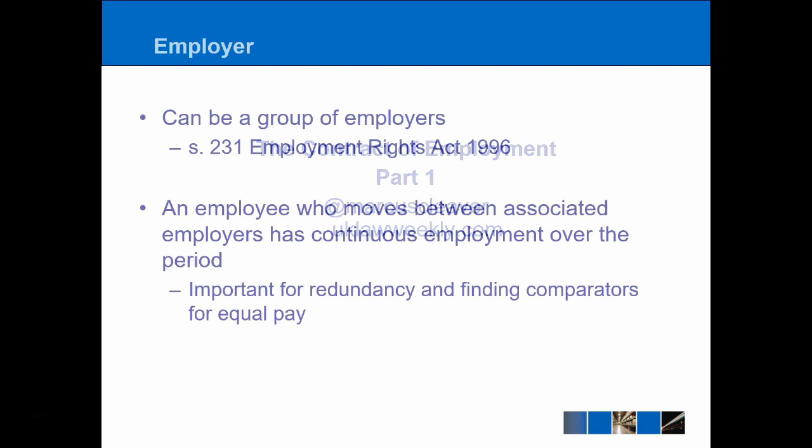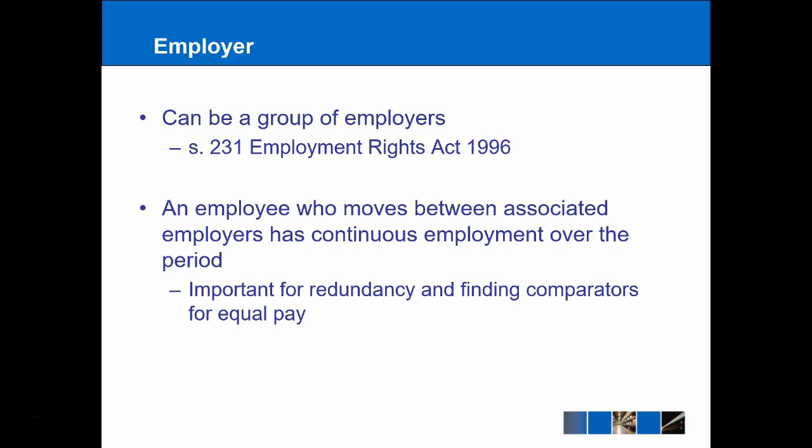Probably the first person to think about when considering the contract of employment is the employer, and this should be relatively easy to define in any problem question because it will be the person who is paying money for the work to be done. Importantly, under Section 231 of the Employment Rights Act 1996 — or ERA 96 as I'll commonly refer to it — this can also refer to a group of associated employers who can employ a range of employees. If employees move from one associated employer to another, their service is considered as continuing for the purposes of employment law.